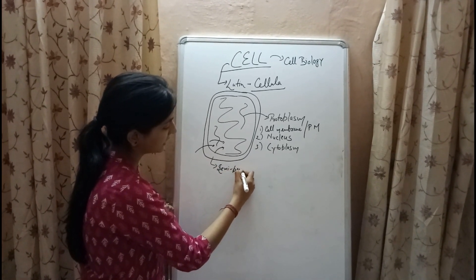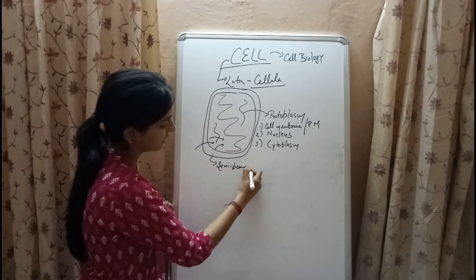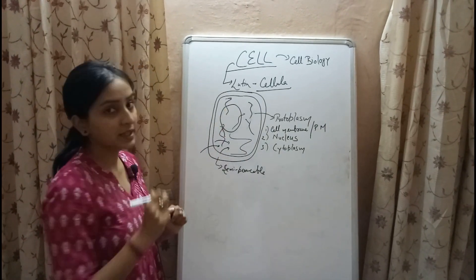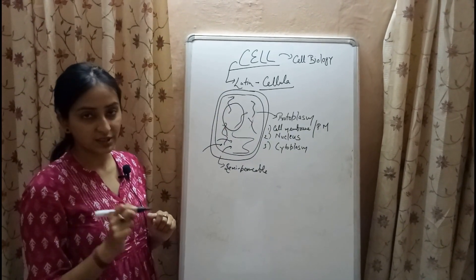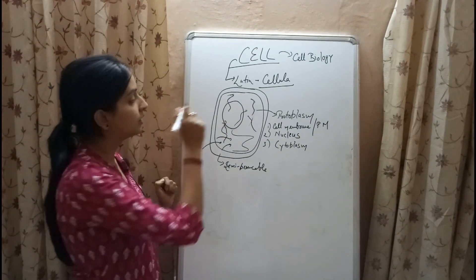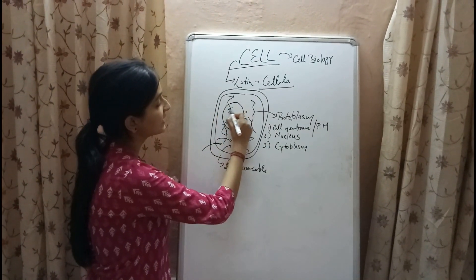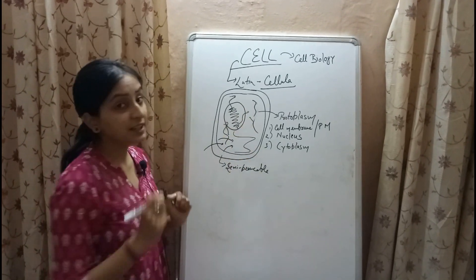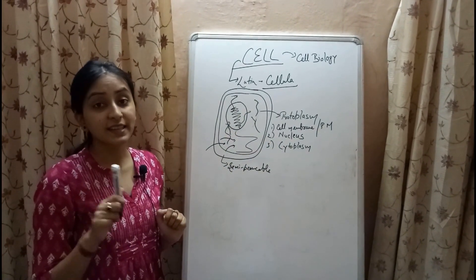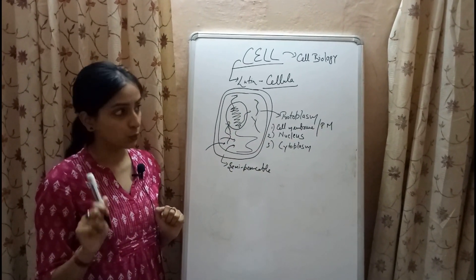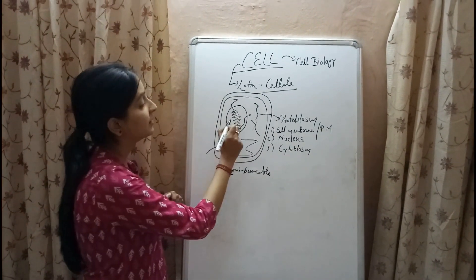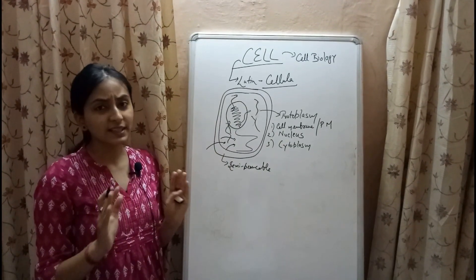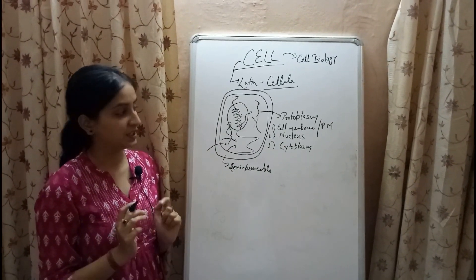The second part is the nucleus. It is an oval or spherical structure present inside the cell. It contains hereditary information and it is the largest cellular structure known. It is responsible for controlling all the cellular activities.